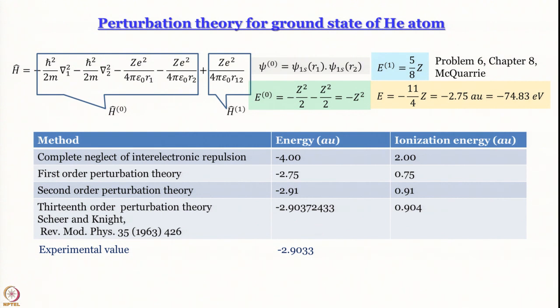That is what we get using perturbation theory for the helium atom ground state. Note that the variational upper-limit theorem applies here as well — −2.90372 is still greater than −2.9033. Next, we want to use the variational method and see what we get, and as we said there are some more topics to discuss before we can get there.